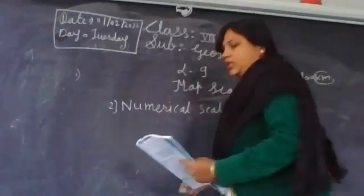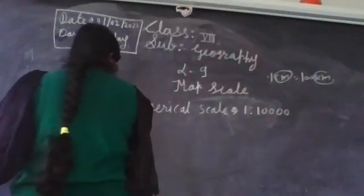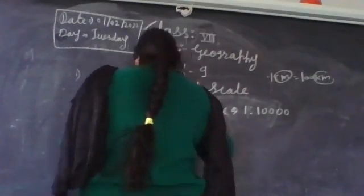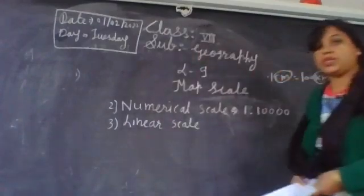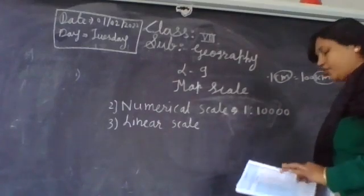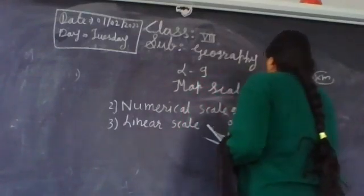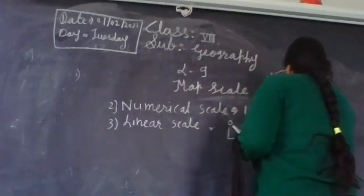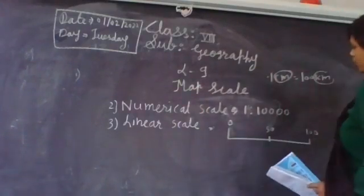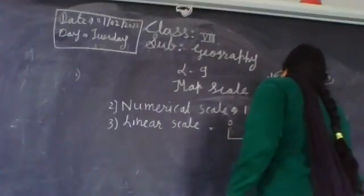The last type of the map scale is the linear scale. The third one is the linear scale. In this type of scale, distances are expressed by drawing a graphical scale. For example, see here — the distance starts from 0, then 50, and then 100. That means a scale from 0 to 100 has been shown, in kilometers.